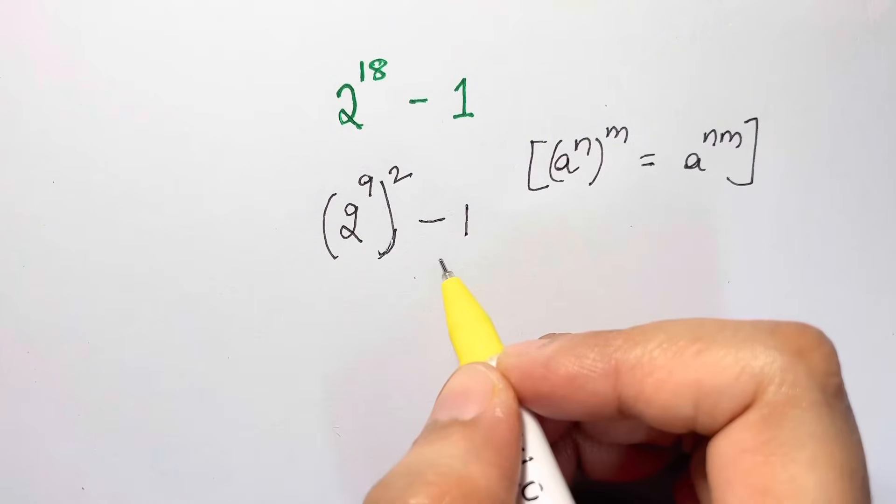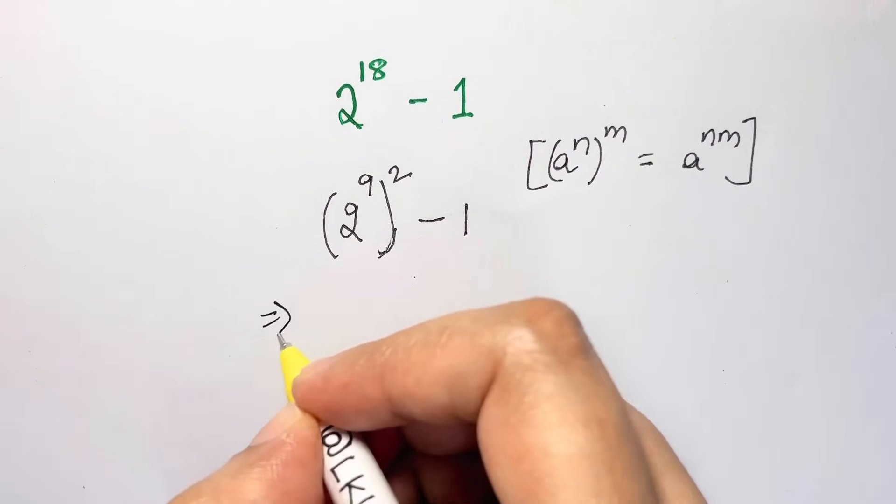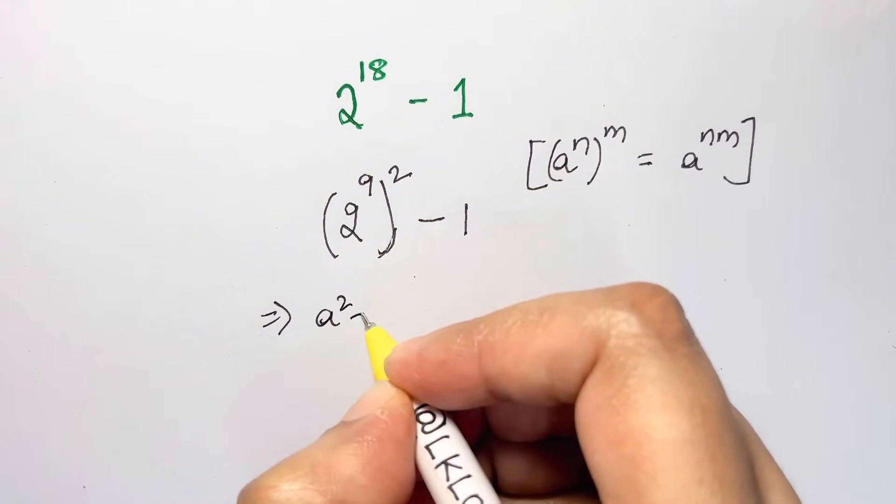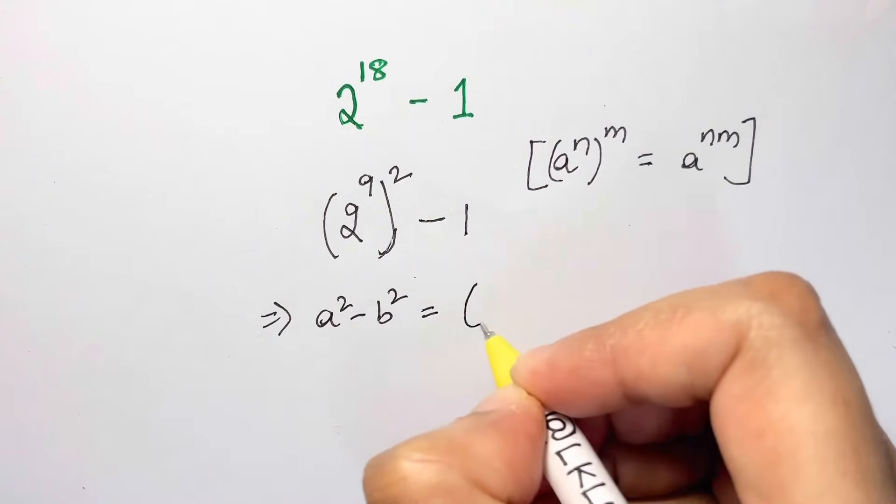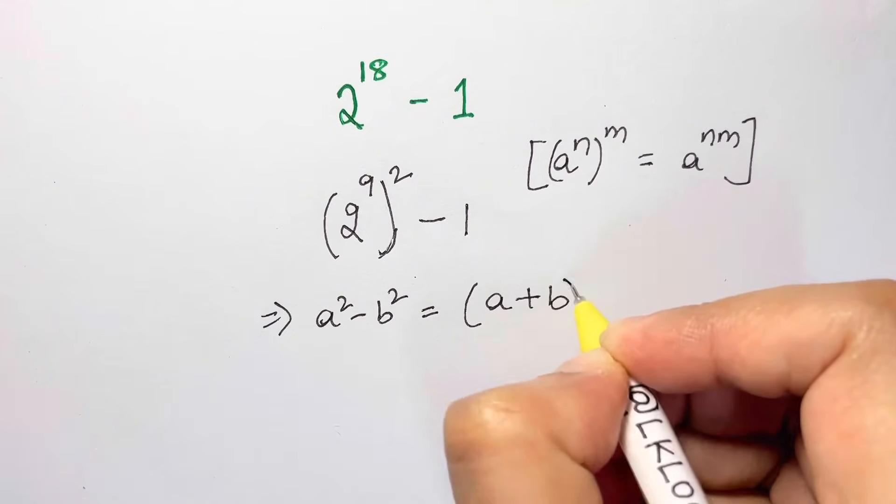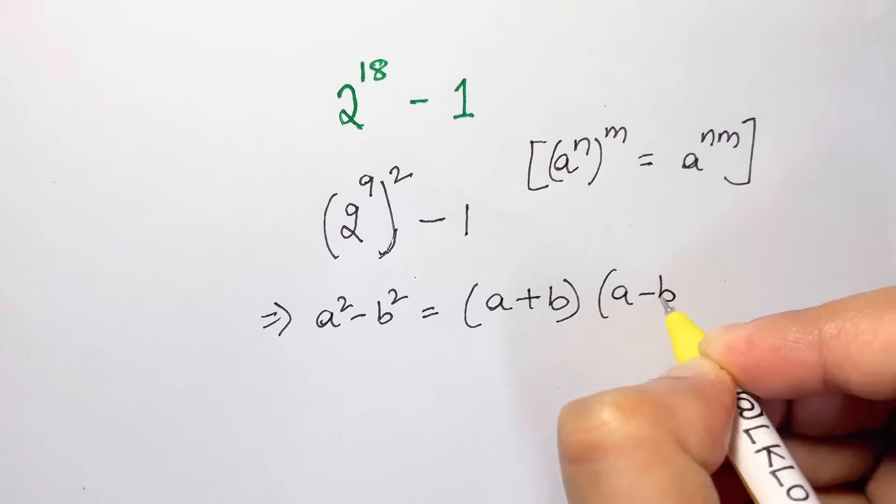Now what does it look like? This is in a form of an identity: a square minus b square which is equal to a plus b times a minus b.